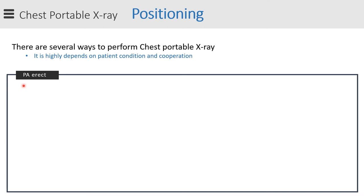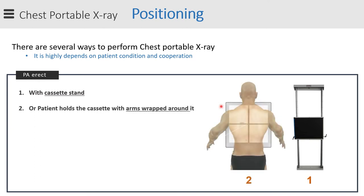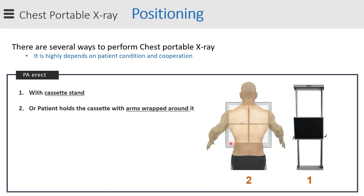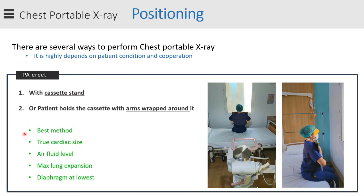PA upright is also used for those who are suspected and cannot be transported to the radiology department. You can use a cassette stand if available; if not, instruct the patient to hold the cassette with arms wrapped around it while standing or, better, sitting at the side of the table or bed. This is the best method of performing portable chest x-ray — you have all the advantages of a normal PA, except there is no grid. Cardiac silhouette is in true size, air-fluid levels can be assessed, and there is maximum lung expansion with the diaphragm at its lowest position.